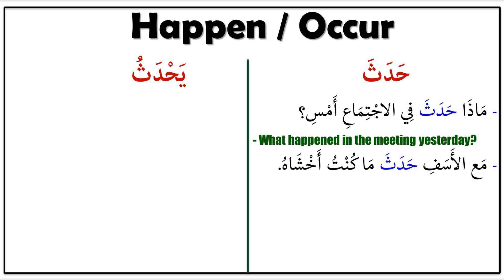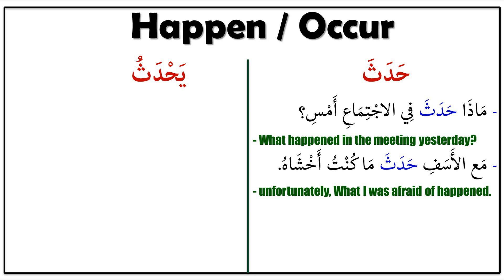The next sentence: مَا الْأَسَفِ حَدَثَ مَا كُنْتُ أَخْشَاهُ — maa al-asafi haditha maa kuntu akhshaa — it means 'unfortunately, what I was afraid of happened.' Maa al-asafi means unfortunately, haditha means happened, maa kuntu akhshaa means what I was afraid of.